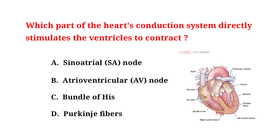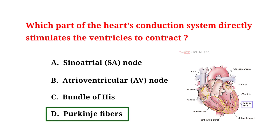Which part of the heart's conduction system directly stimulates the ventricles to contract? A. Sinoatrial node. B. Atrioventricular node. C. Bundle of His. D. Purkinje fibers. And the correct answer is D: Purkinje fibers. The Purkinje fibers in the walls of the ventricles directly stimulate the ventricles to contract. They receive electrical signals from the SA node, the heart's pacemaker, and transmit them quickly to stimulate ventricular contraction.